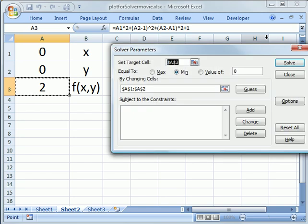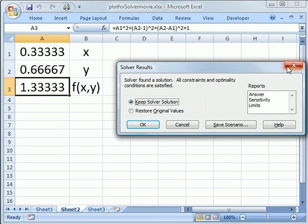I get our dialog box. Notice the target is already set to cell A3. I just went there by clicking on that. I want to minimize the function, and I want to minimize it by changing cells A1 to A2. So we click Solve, and we quickly get a solution.